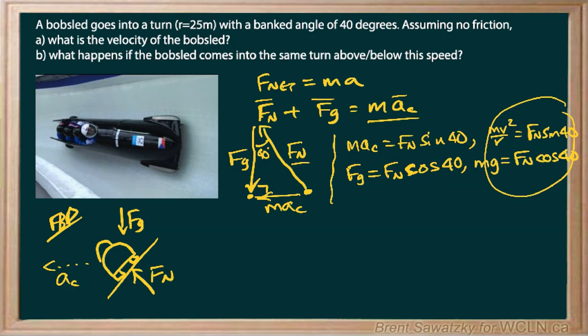So there's a number of ways you could do this. One way is we could solve both of these for fn. So the first one, if we solve it for fn, we would end up with mv squared over r sine 40. Now let's take the second one and also solve it for fn. We would have mg over cos 40.